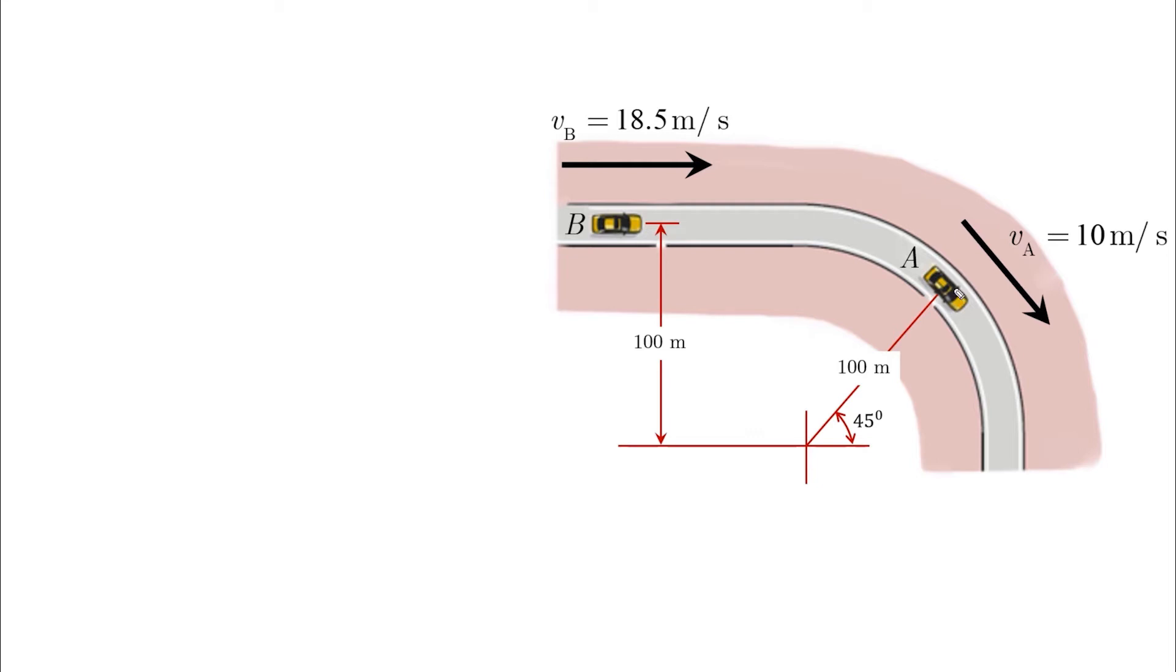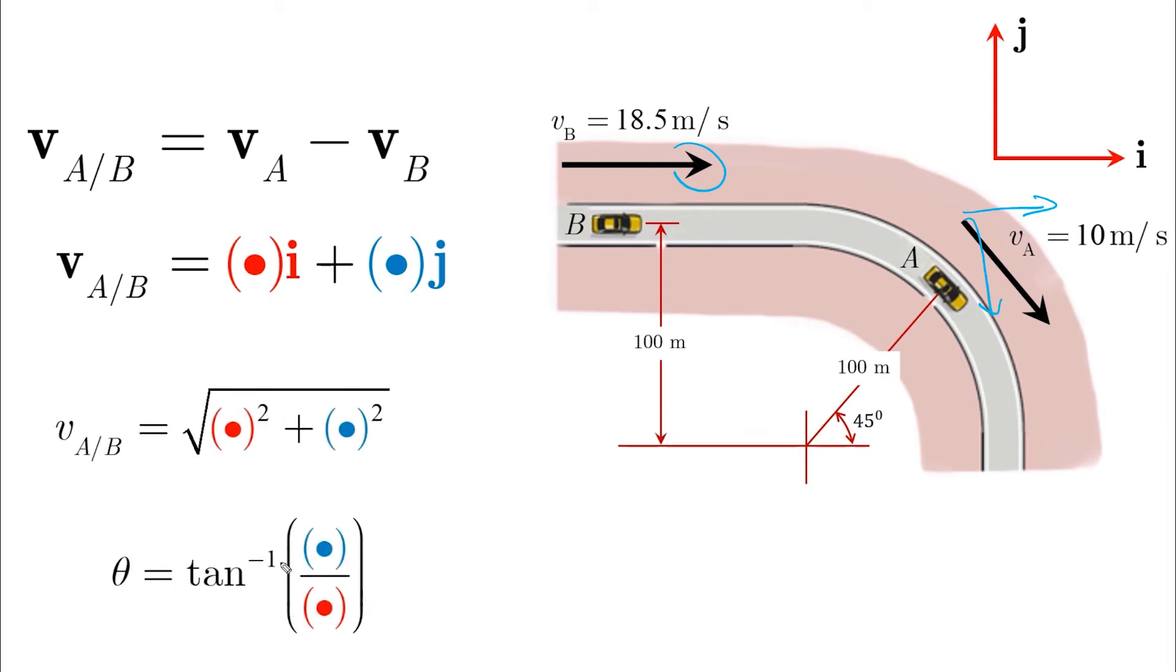vB has two components in the i and in the negative j. vA has a component in the positive i. So if we add these components together and we collect the i and j components, then we can find the magnitude and we can also find the direction.